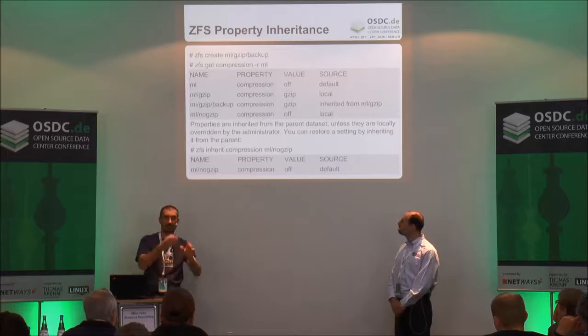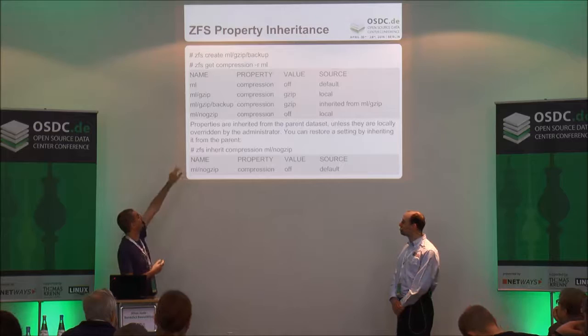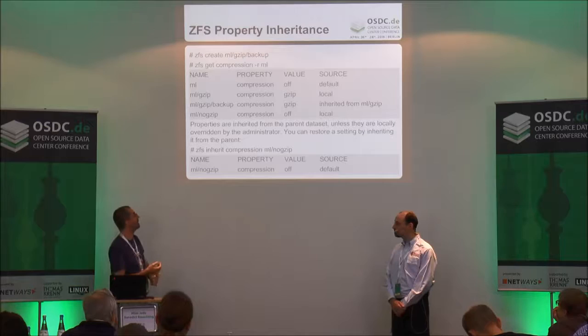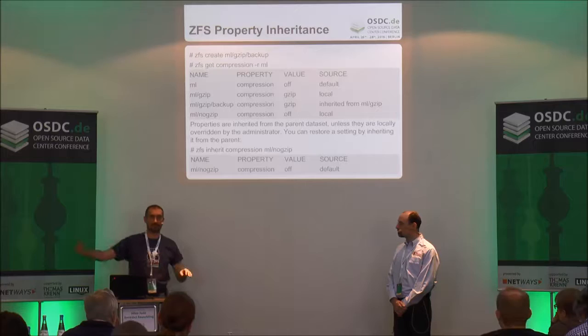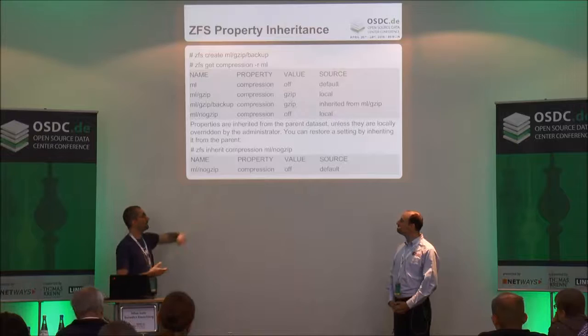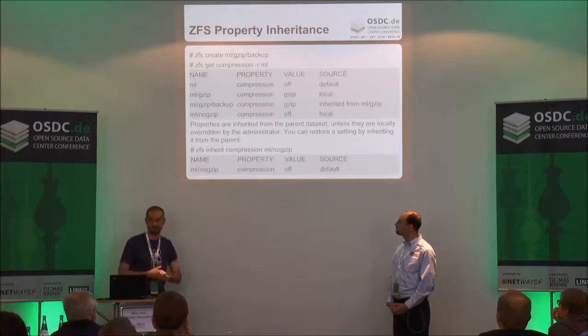ZFS has inheritance — you can create datasets that are children of other datasets. You don't want to manage settings on each individual dataset, so there's inheritance: if you create a dataset called 'backup' under the GZIP dataset, it automatically inherits the compression setting from its parent, although you can still override it locally. You can easily turn compression on for everything at the root of your tree, then disable it for one specific workload. If you use the inherit command, it will take the property from its parent instead of the local setting.